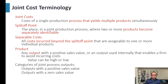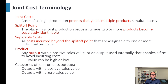Before going into these specific methods, we want to learn some terminologies used in this chapter. Joint costs are the cost of a single production process that yields multiple products. Before reaching identifiable different products, the products are in process, and whatever cost we incur for that process is called joint cost.